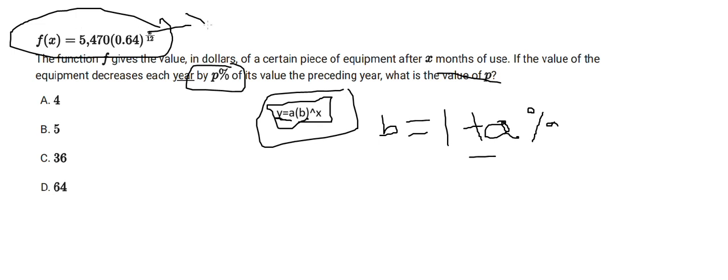We can convert it as: a stays as is, that is 5740, and for 0.64 we can write 1 minus p percentage.